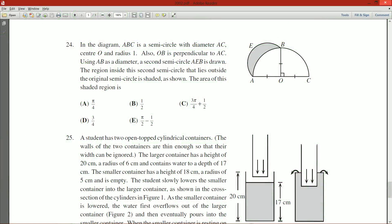We're on question 24, which says in the diagram, ABC is a semicircle with diameter AC and center O and radius 1. All these things coming out of O are radii, they're marked so we know they're equal. Also, OB is perpendicular to this diameter.